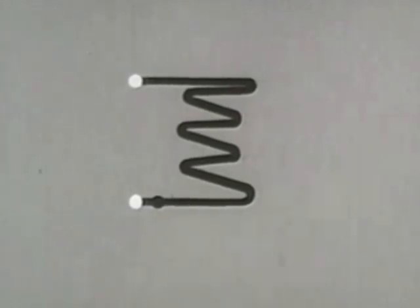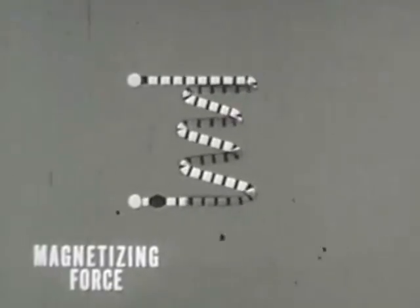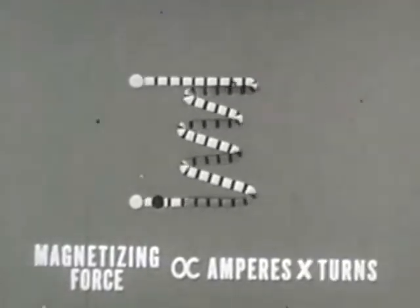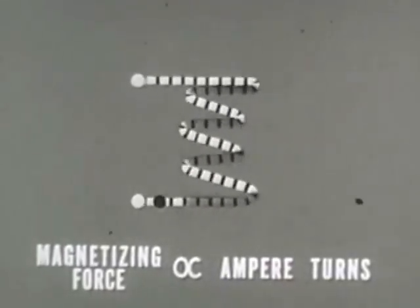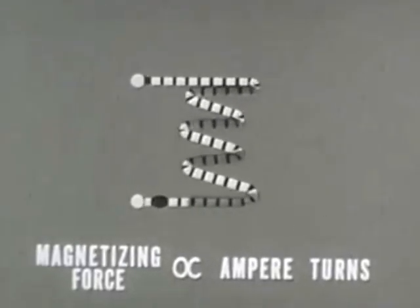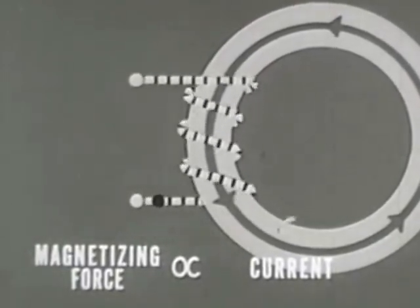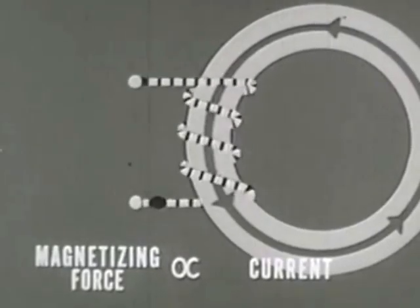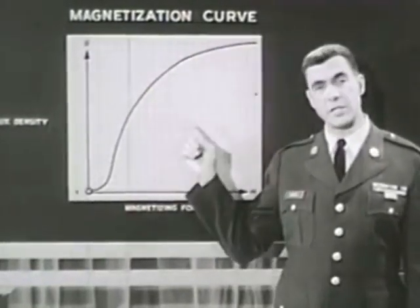Any winding around the core obeys the laws of electromagnetism. The magnetizing force it exerts is proportional to the amount of current flowing through it, measured in amperes, times the number of turns in the coil — or, as it is usually expressed, the ampere turns. Since the number of turns in the winding is constant, the magnetizing force exerted on the core is proportional to the winding's current. If we increase the amount of current, the total magnetism of the core will also increase, but not proportionately, as we'll see on this graph.